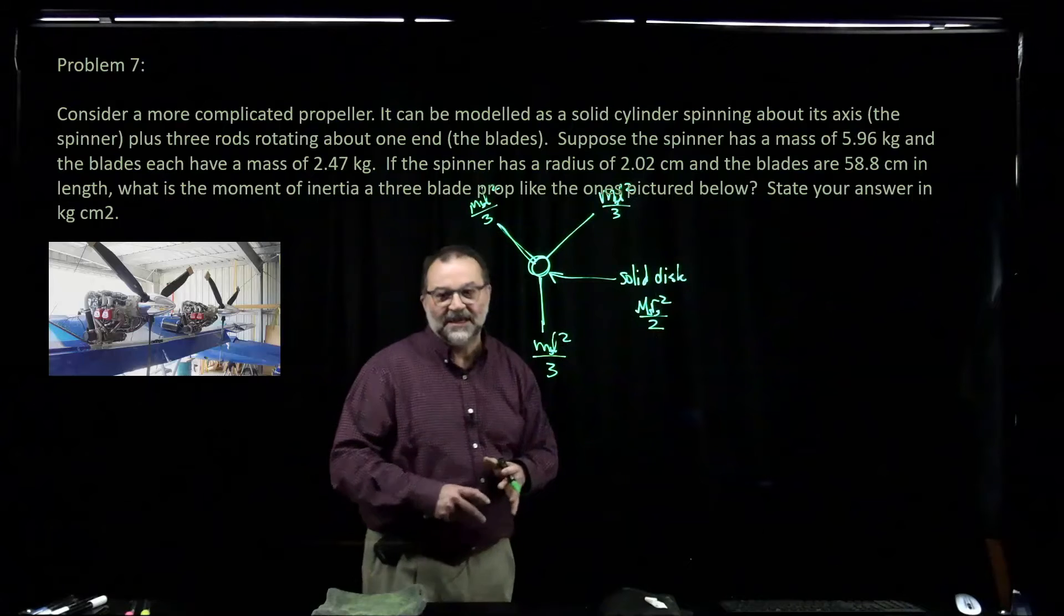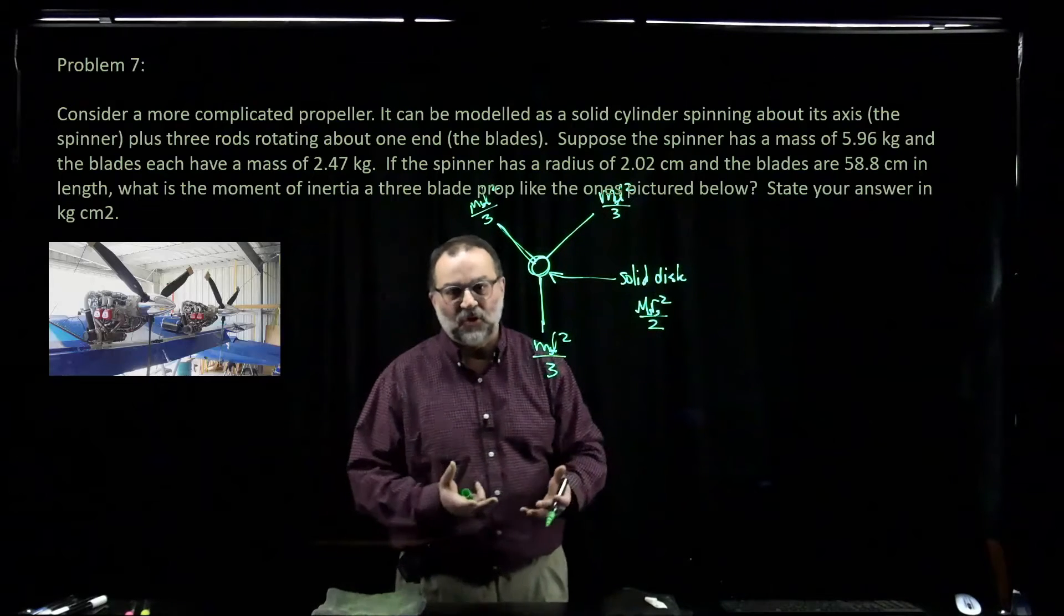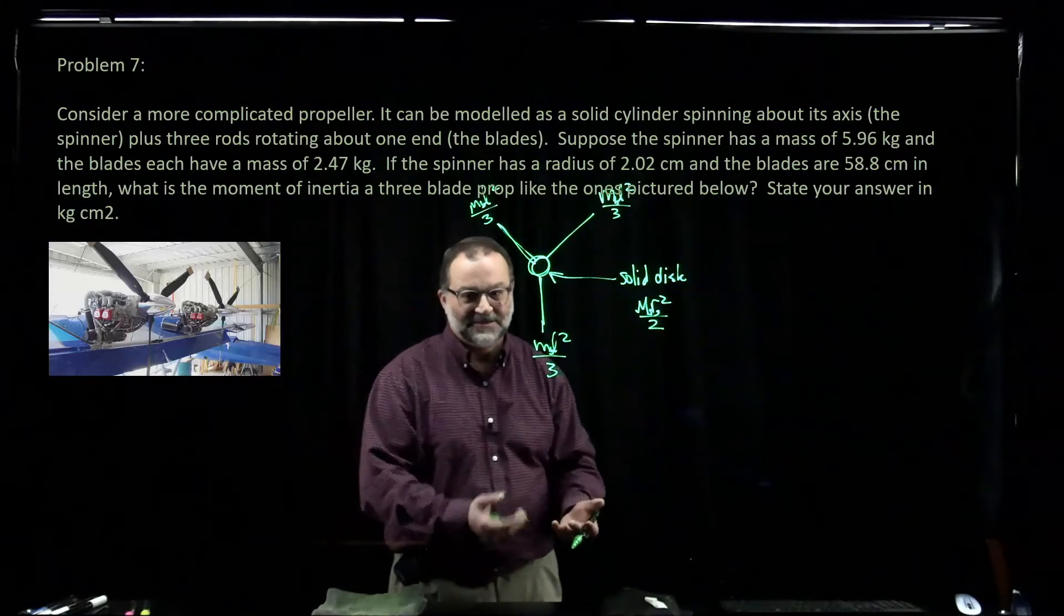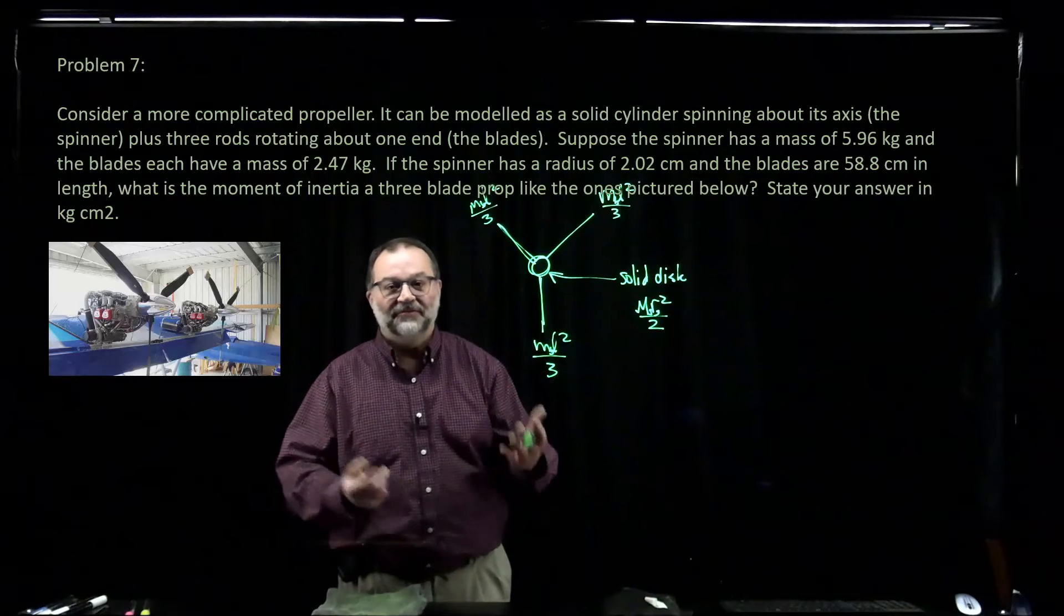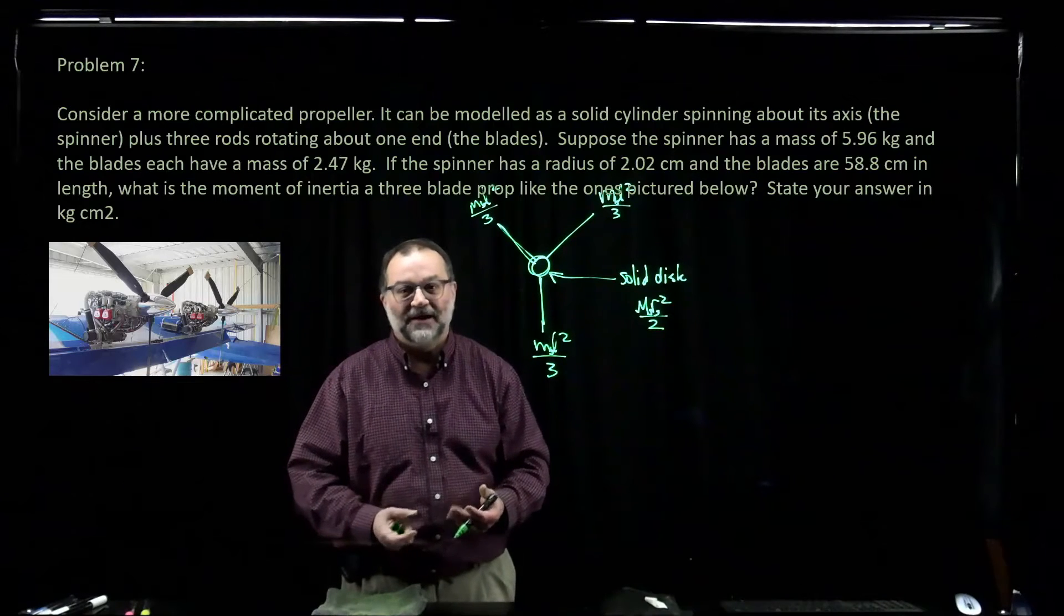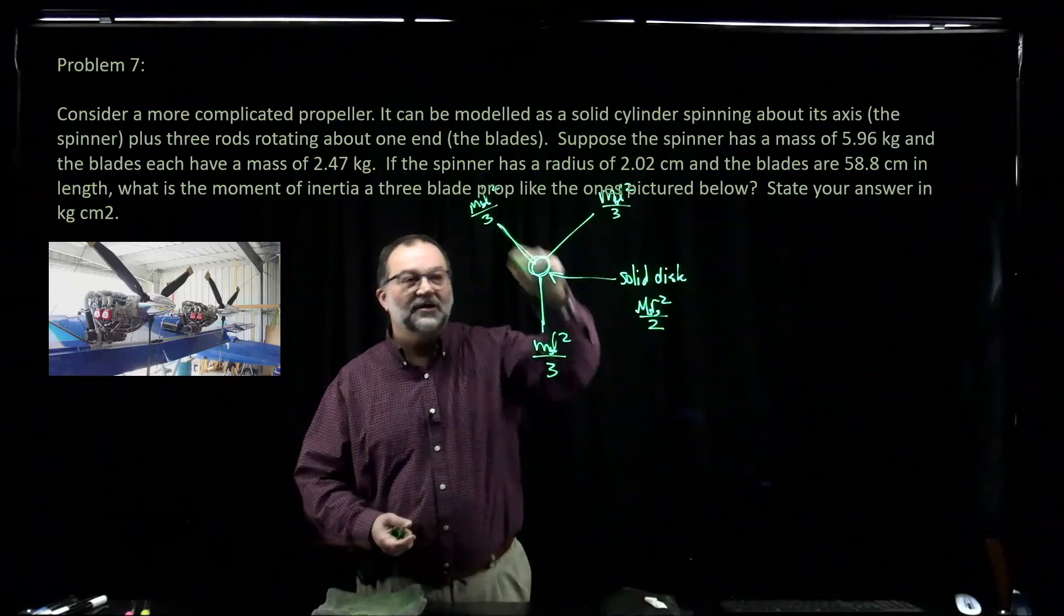And so you can put together what the total moment of inertia is for this object based on the information you're given. So we've got the spinner, three blades.